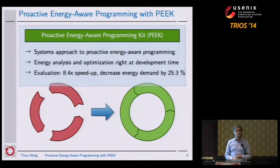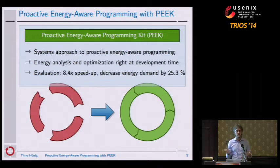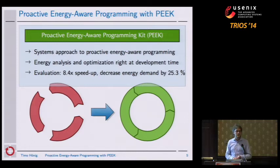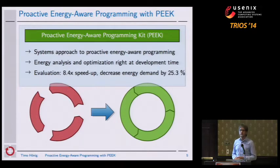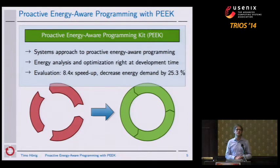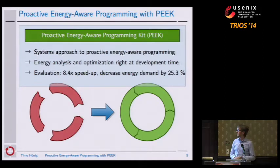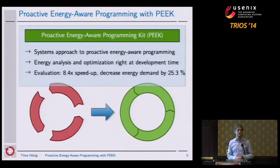We implemented a systems approach consisting of two main components. One is software running on different machines, and the other contribution is a hardware measurement device which is easy to use for developers. In our evaluation, we show that we could speed up the task of energy profiling and analysis steps by a factor of 8.4, and at the same time we could show that by using energy optimizations, programmers could decrease the energy footprint of applications automatically by 25%.